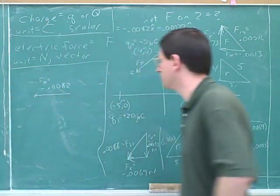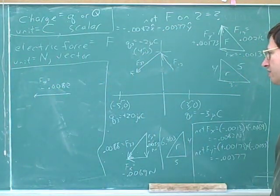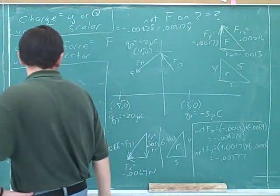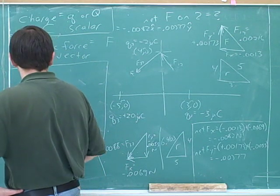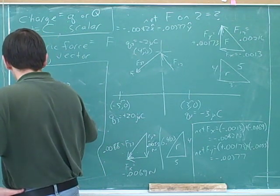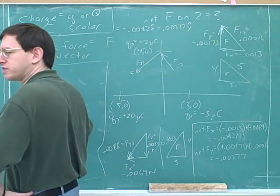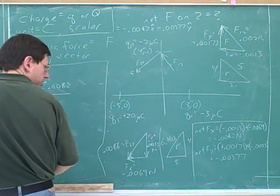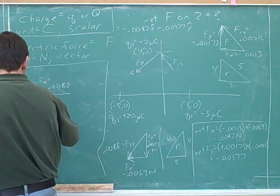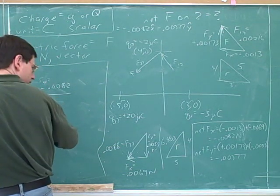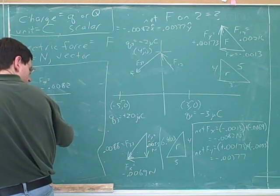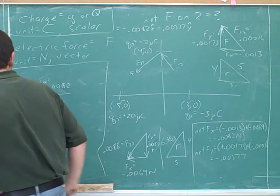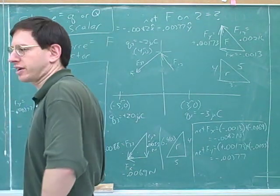And then, should the y-component be pointing up or down? Down. Now I'm not going to draw that over here. Although, actually I guess you could... No, it's better you have to draw here. Head-to-tail method—where the head of the first vector ends has to be the tail of the next vector. So using the head-to-tail method, we'll draw the y-component here: negative 0.00377. And now let's draw the overall vector.